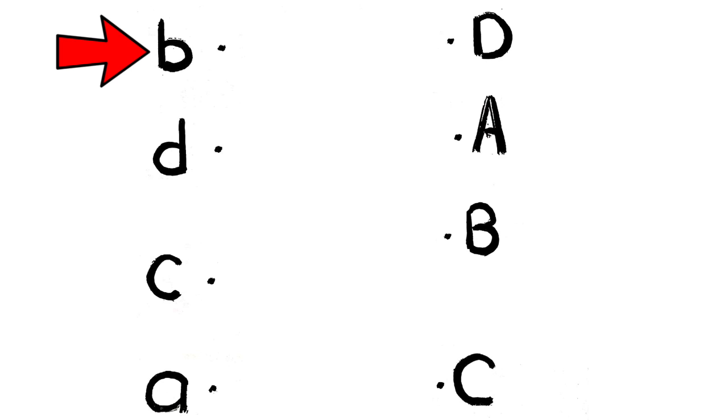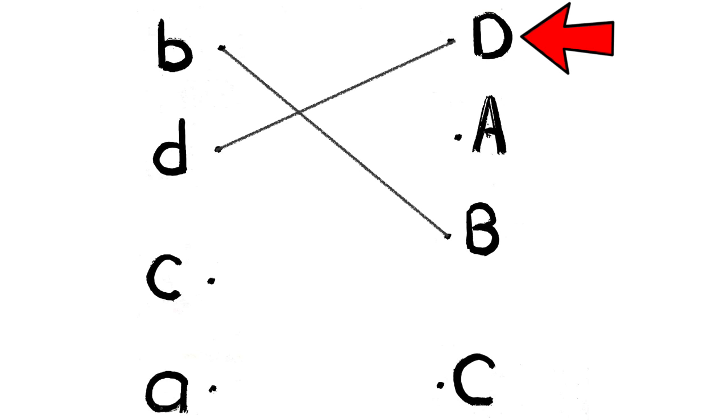This is the small letter B. Where is the capital letter B? Match. This is the small letter D. Where is the capital letter D? Match. This is the small letter C. Where is the capital letter C? Match. This is the small letter A. Where is the capital letter A? Match.